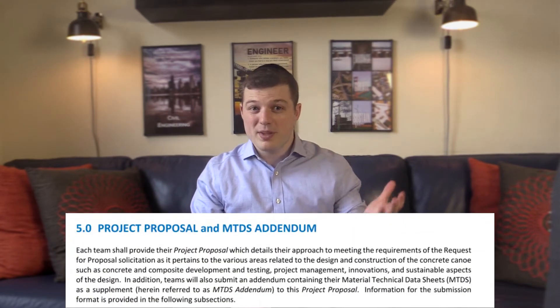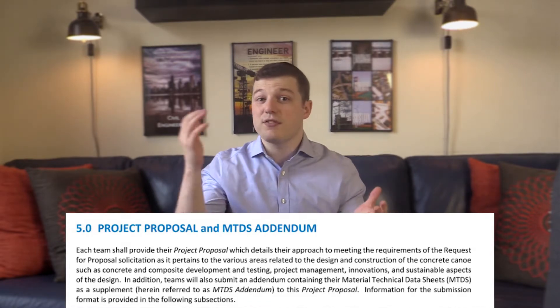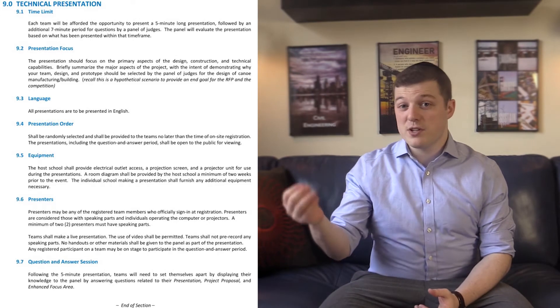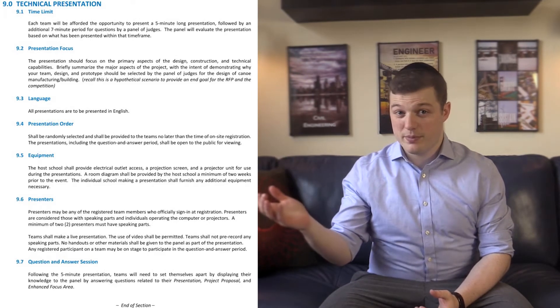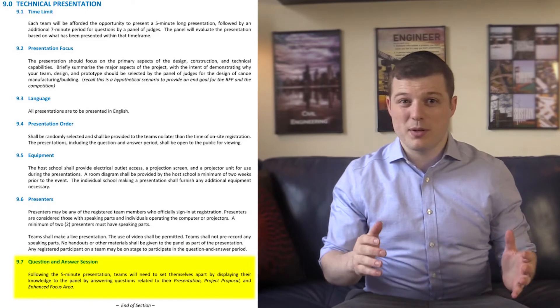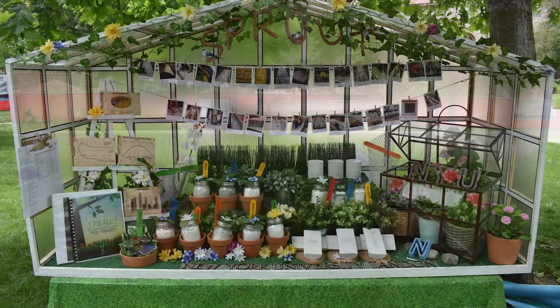The Design Paper is a written paper explaining the entire process of making your canoe, from designing to the final product, while the Oral Presentation is a visual form of the same information. After the Oral Presentation, there's a question and answer segment where the judges can ask you about what was just presented. The final product section consists of the actual canoe, the stands, as well as the booth displaying the required information.